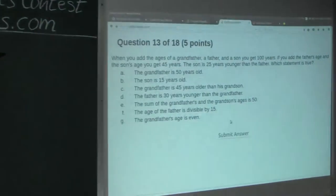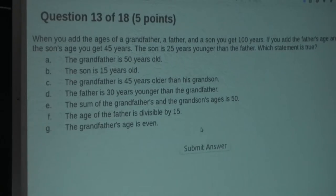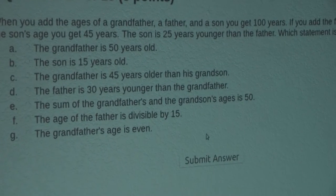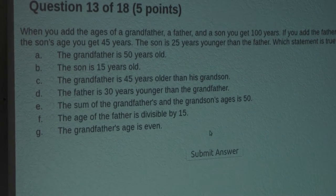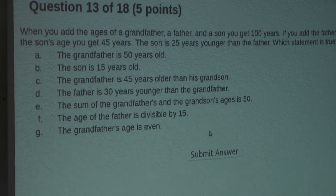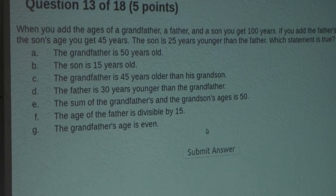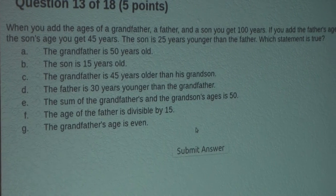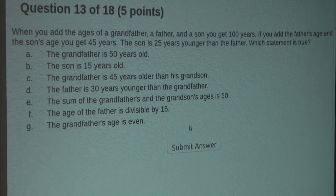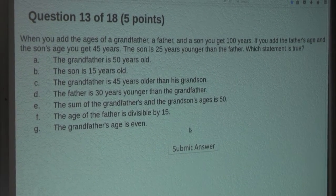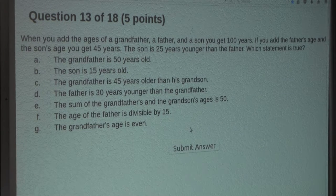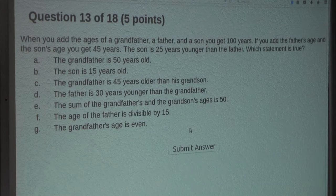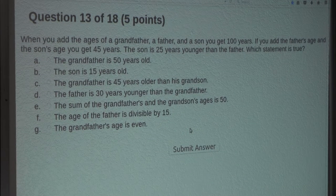The question is: when you add the ages of a grandfather, a father, and a son, you get 100 years. If you add the father's age and the son's age, you get 45 years, and the son is 25 years younger than the father. Which statement is true?